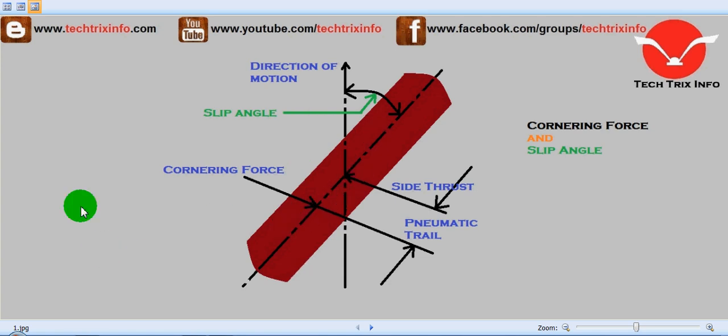While taking a turn, the centrifugal forces acting on the vehicle produce a side thrust like this. A side thrust is acting towards the vehicle wheels when it is taking a turn.